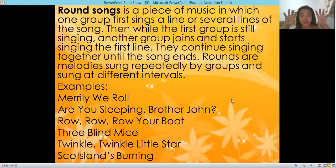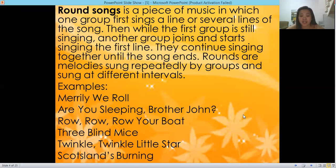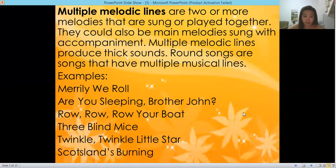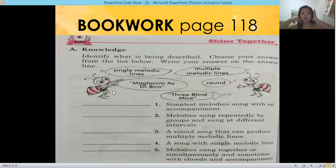When there are two, three, or more groups singing at different intervals, that is thick texture. Some songs we can sing as round songs are 'Merrily We Roll Along,' 'Are You Sleeping,' 'Brother John,' 'Row Row Your Boat,' 'Three Blind Mice,' 'Twinkle Twinkle Little Star,' and 'Scotland's Burning.' Multiple melodic lines are two or more melodies sung or played together — they could also be a main melody sung with accompaniment. Multiple melodic lines produce thick sounds. Round songs have multiple musical lines. Please get your book and open it to page 118.